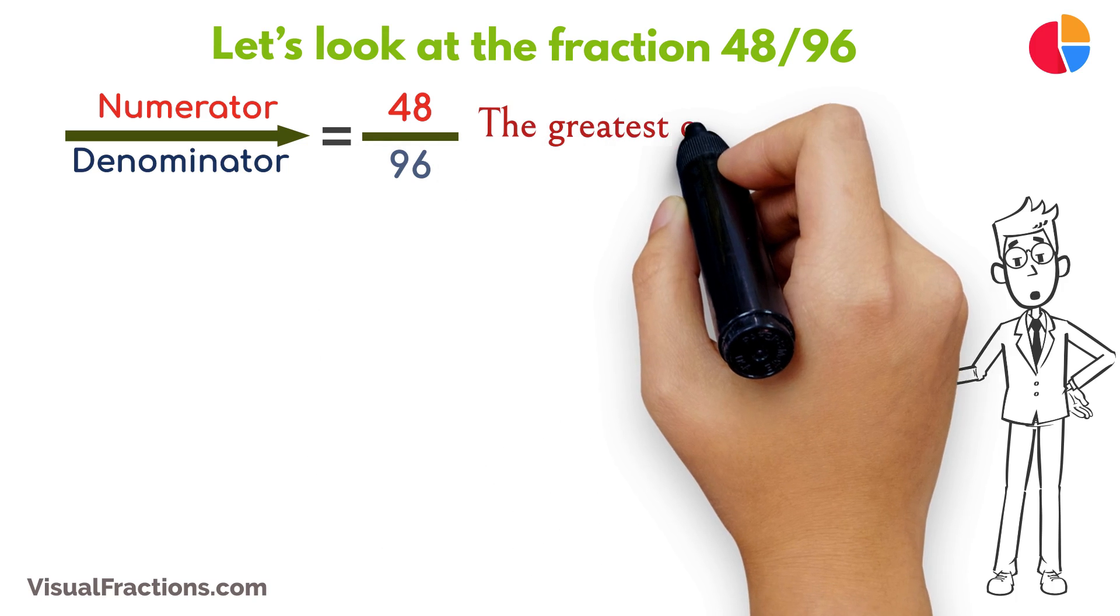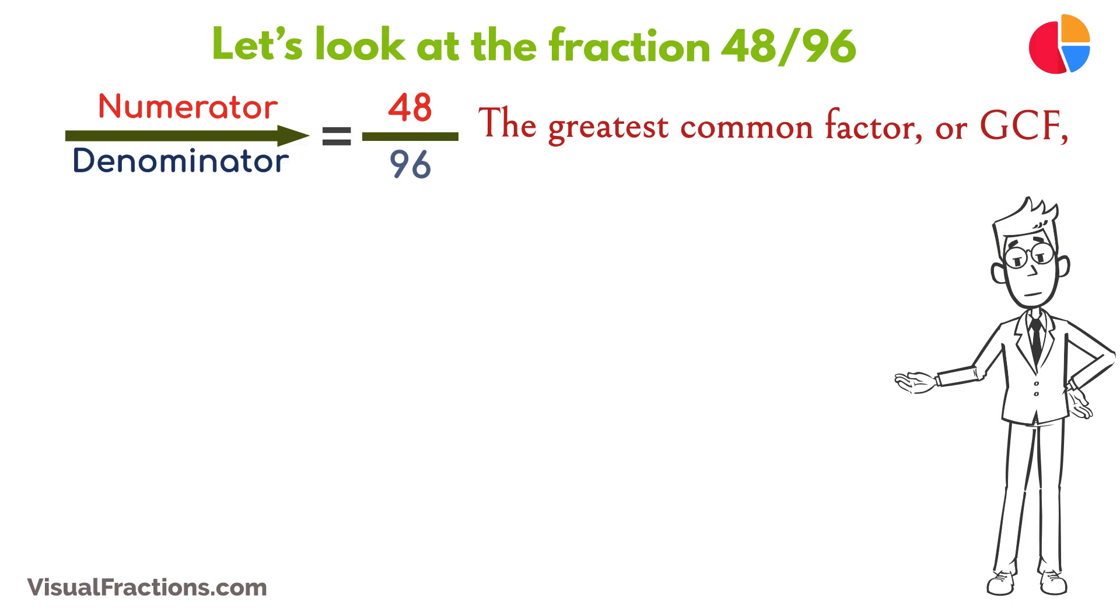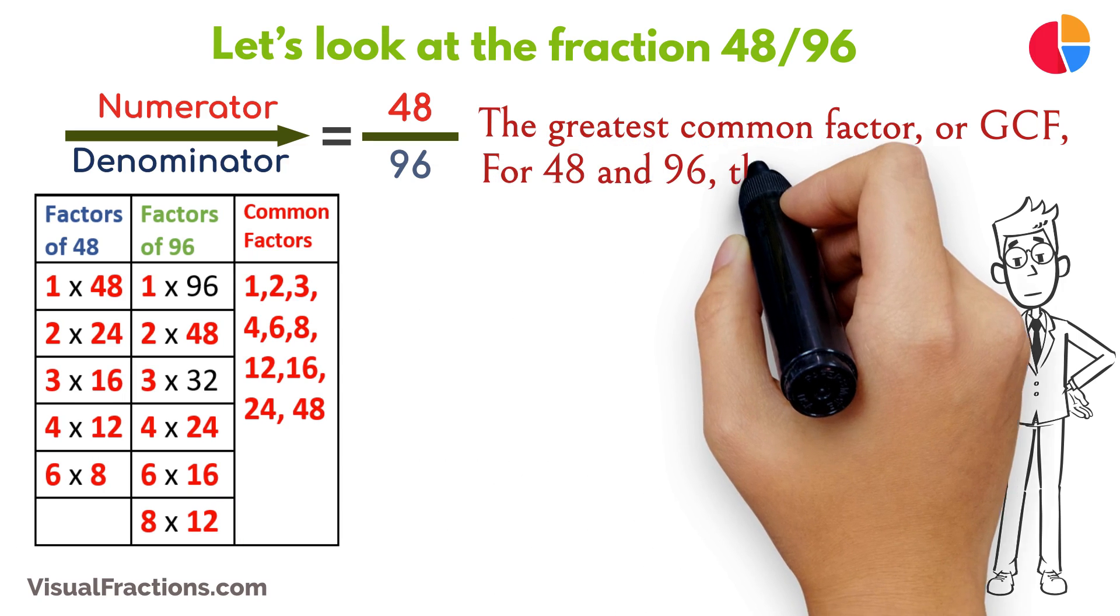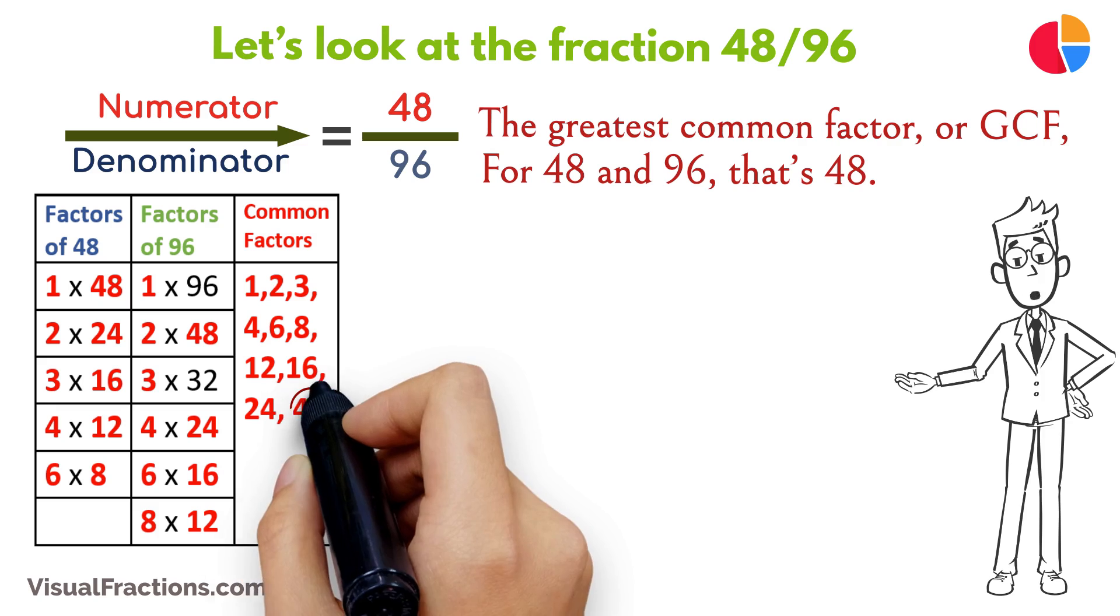The greatest common factor, or GCF, is the largest number that can evenly divide both the numerator and the denominator of a fraction without leaving a remainder. For 48 and 96, that's 48.